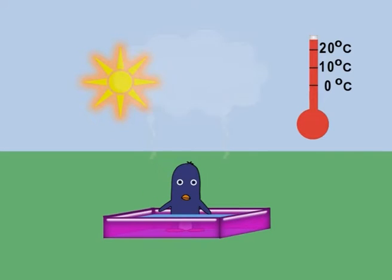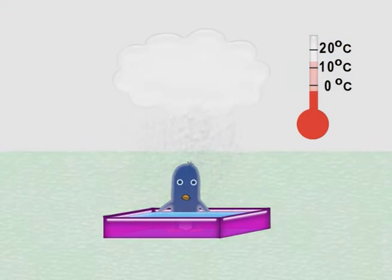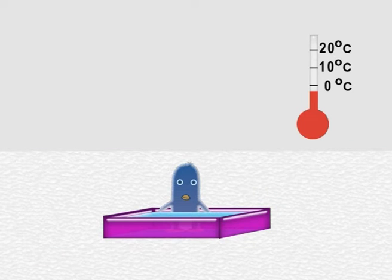Water can evaporate and condense again. That is how we get clouds and rain. Freeze it and it turns into blocks of ice. Melt it if you think that solid isn't nice.